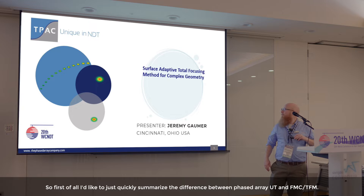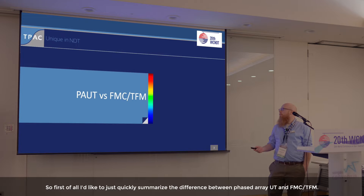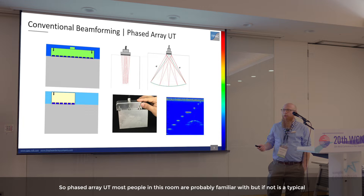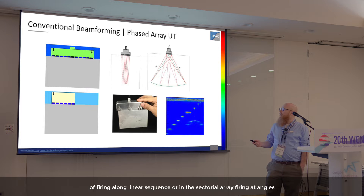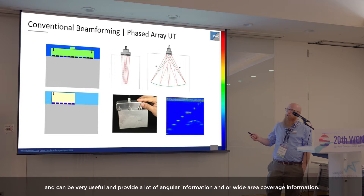First, I'd like to quickly summarize the difference between phased array UT and FMC/TFM. Phased array UT — most people in this room are probably familiar with it — is a typical multi-element pulsing method. It can be used in a linear array firing along a linear sequence, or in the sectorial array firing at angles, providing angular information and wide area coverage.